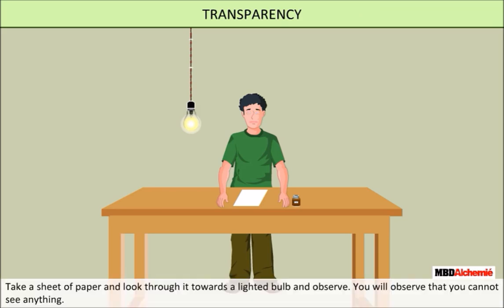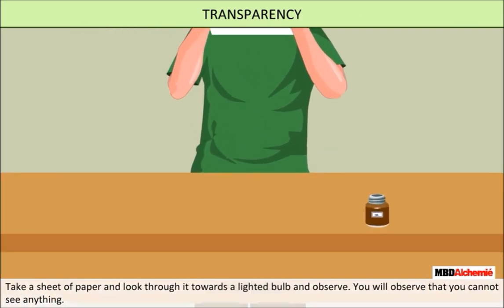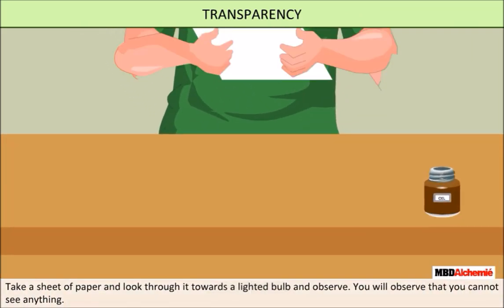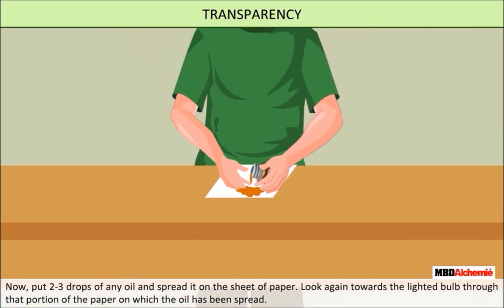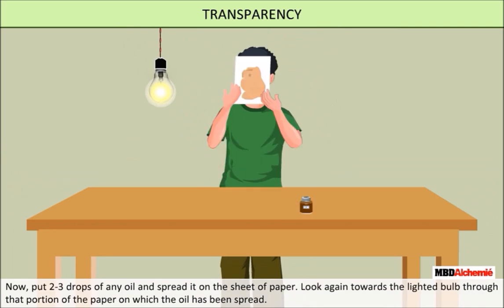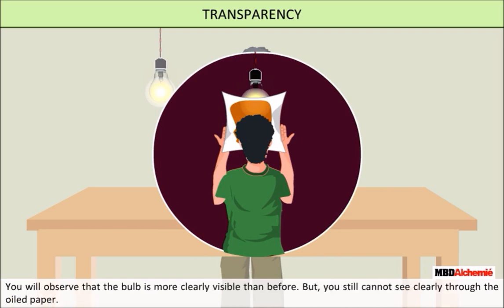Transparency. Take a sheet of paper and look through it towards a lighted bulb and observe. You will observe that you cannot see anything. Now, put two to three drops of any oil and spread it on the sheet of paper. Look again towards the lighted bulb through that portion of the paper on which the oil has been spread. You will observe that the bulb is more clearly visible than before, but you still cannot see clearly through the oiled paper. The materials through which objects can be seen but not clearly are known as translucent.